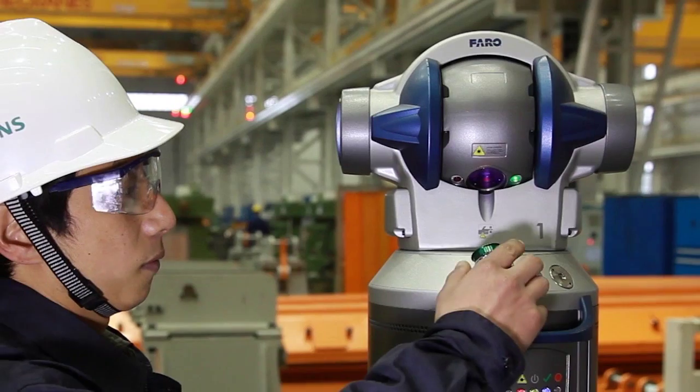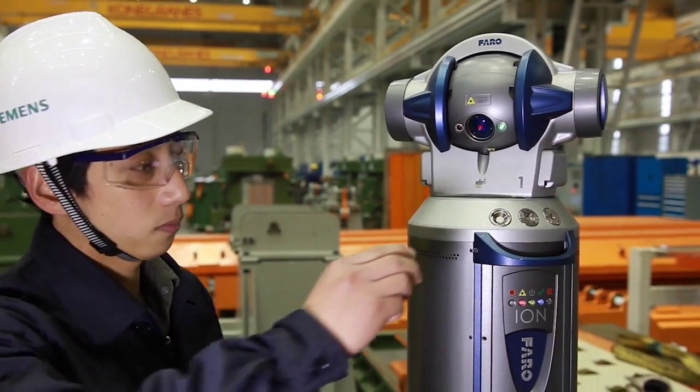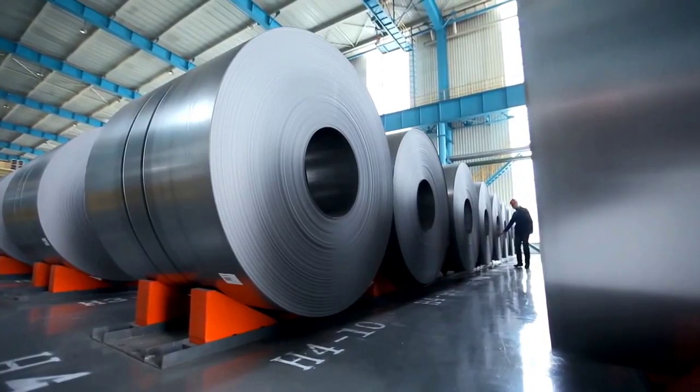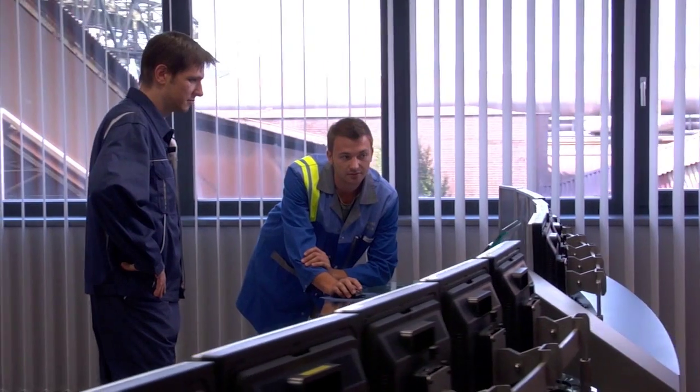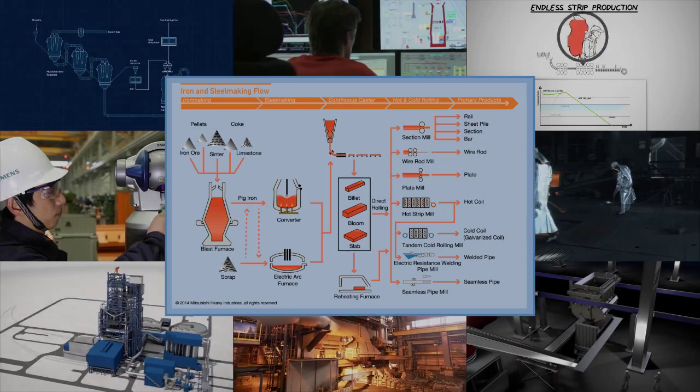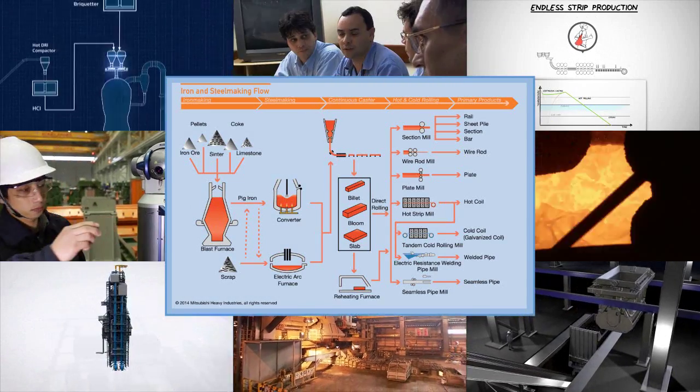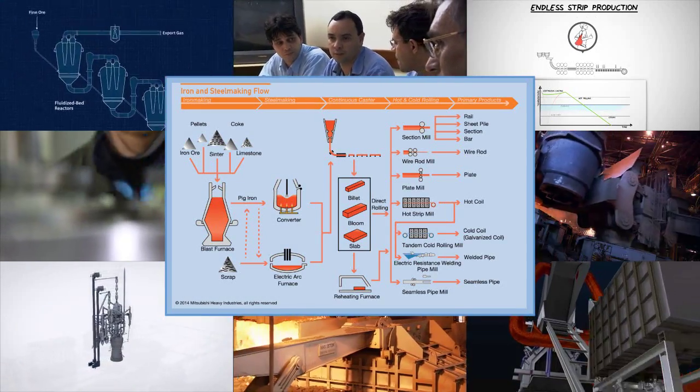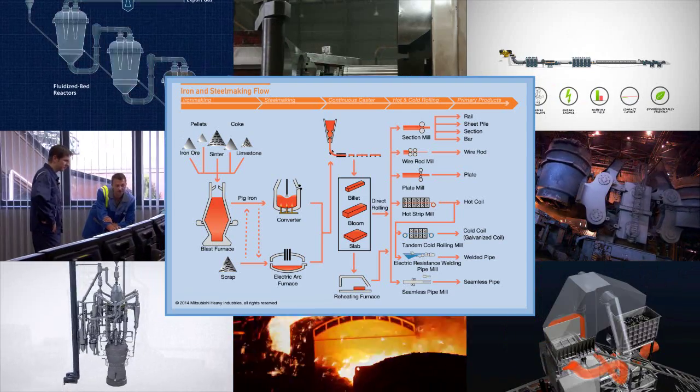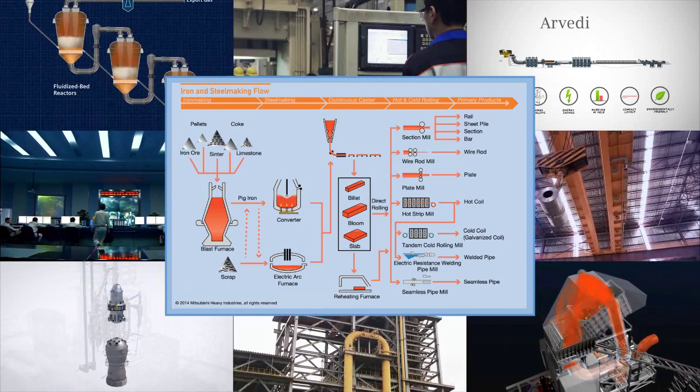Mitsubishi Hitachi Metals Machinery and Siemens VAI Metals Technologies have joined forces to create Prime Metals Technologies. This video introduces five innovation solution areas offered by Prime Metals Technologies, from upstream iron and steel making to downstream rolling and processing.